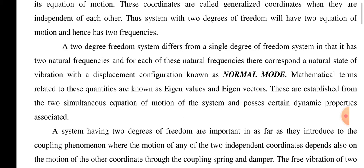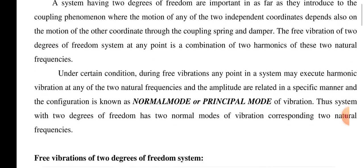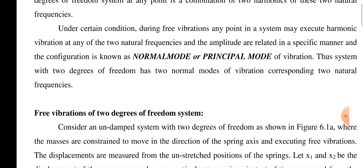These are established from the two simultaneous equations of motions of the system, which propose certain dynamic properties. Under certain conditions during free vibrations, any point in a system makes harmonic vibrations at any of the two frequencies, and the amplitudes are related in a specific manner. This configuration is known as the normal mode or the principal mode of vibration. Thus, a system with two degrees of freedom has two normal modes of vibrations corresponding to the two natural frequencies.